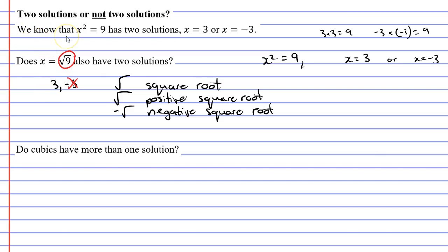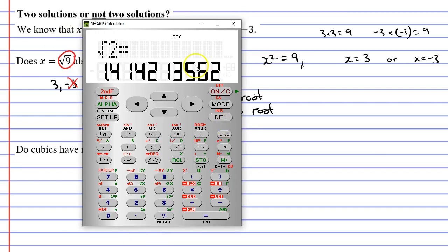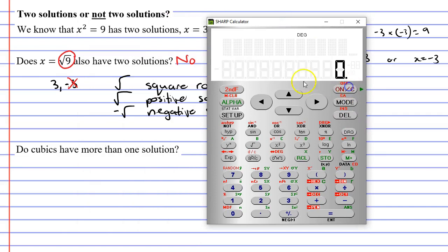So, the answer is no. This only has one solution. And that's why when you use your calculator, and you find the square root of something, the calculator will only give you one solution, because you're actually saying, what is the positive square root of 9? If I wanted to get a negative solution, negative 3, then I need to ask for the negative square root of 9, which will give me the negative solution.